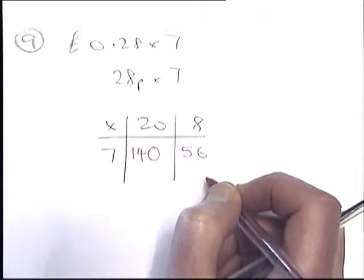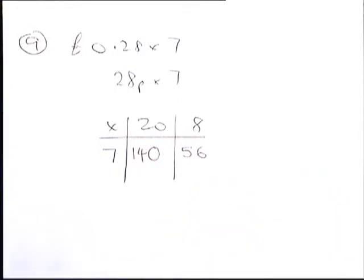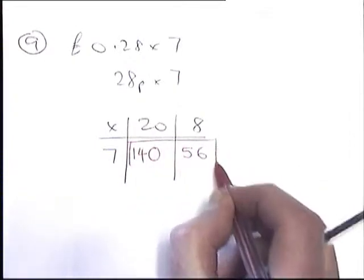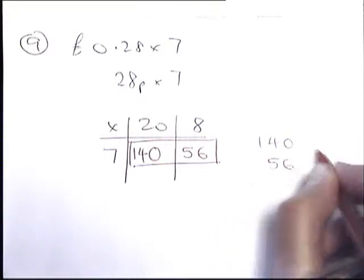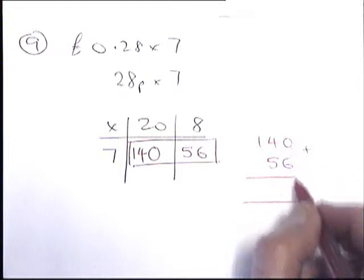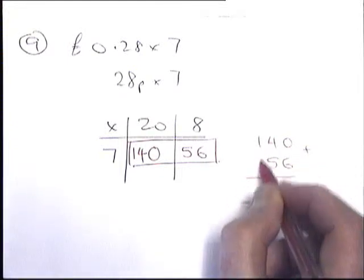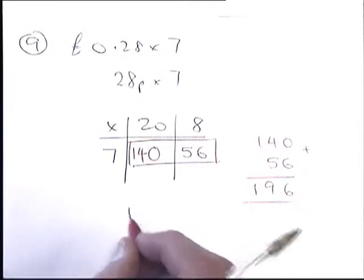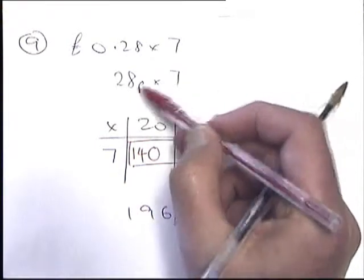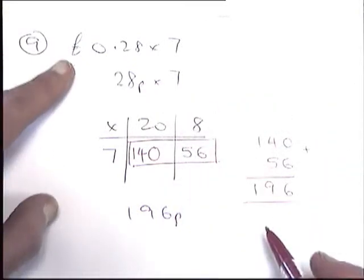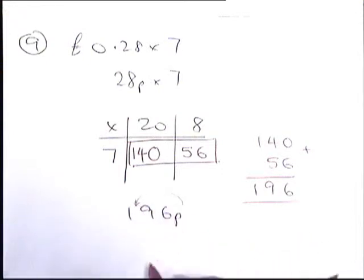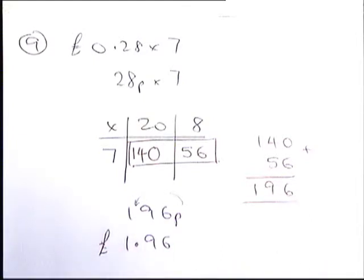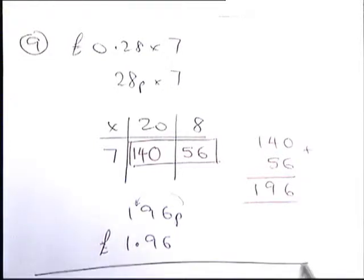You need to know 7×8 from your times tables or work it out by adding up on your fingers. With this method the numbers in the grid need to be added together: 140 and 56. Line them up on the right: 0+6=6, 4+5=9, 1+nothing=1, giving 196 pence. Converting back to pounds, put the decimal point two places from the end: £1.96.